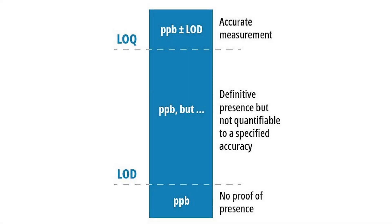So the limit of detection is the point at which you can say definitively that you have proof of the presence or absence of an analyte — in this case, total chlorine. The LOQ is the point above which your accuracy specifications are valid, so you can accurately quantify the amount of chlorine that's present. Between the LOD and the LOQ, you have proof of presence but can't accurately quantify it yet. I think about fully credible data as being measurement values above the LOQ or below the LOD.